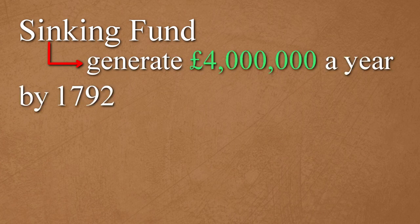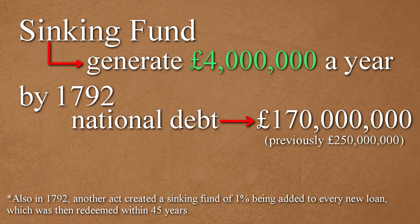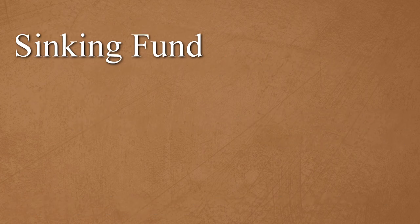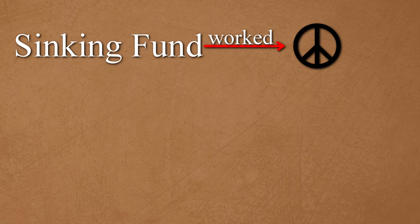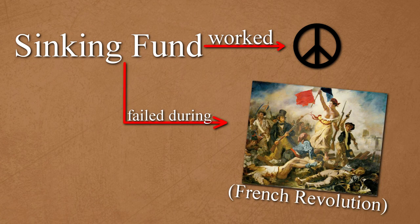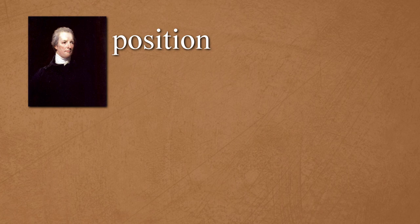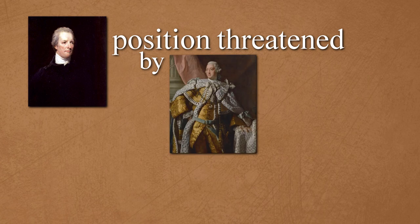By 1792, the national debt was now £170 million. This system worked well in peacetime, but did not function well once war broke out in 1793. Pitt's position as Prime Minister came under threat again in 1788, during George III's period of madness.